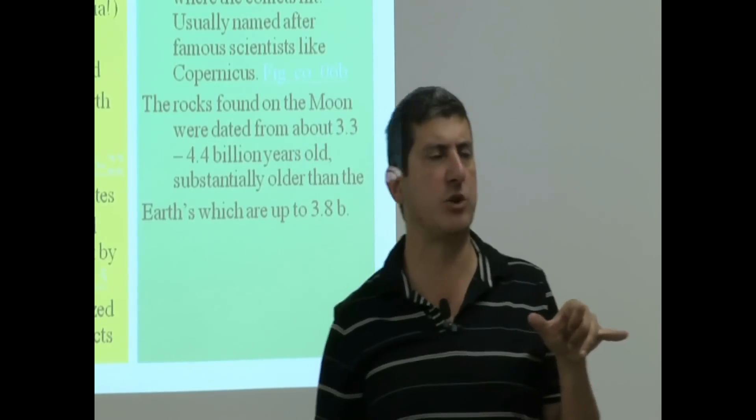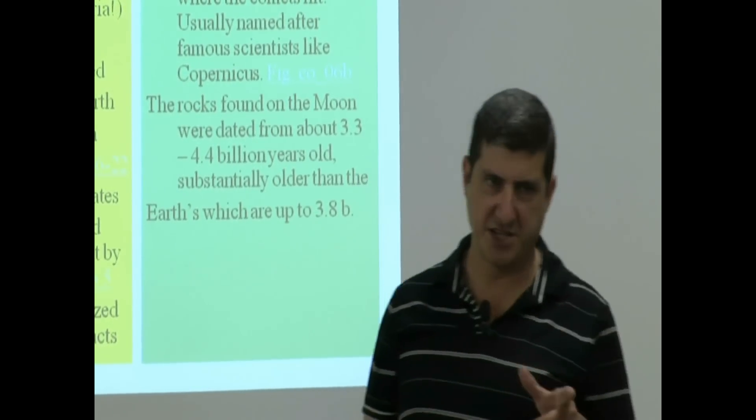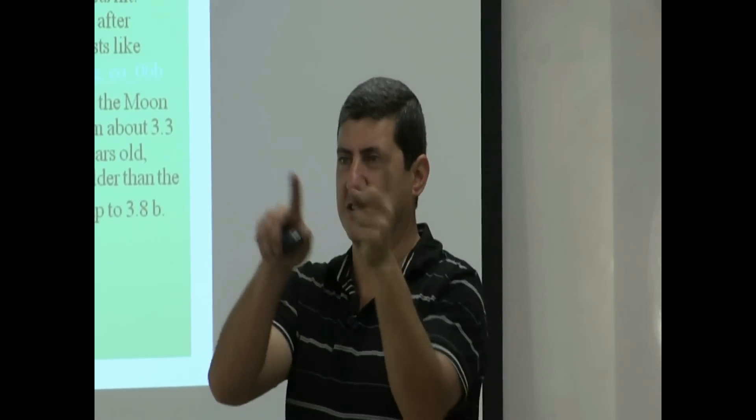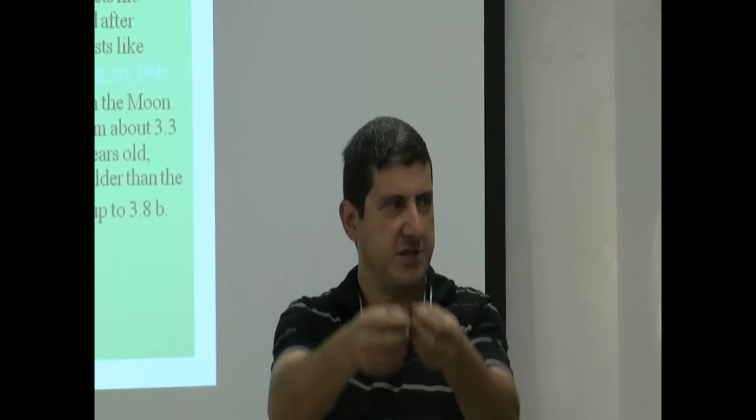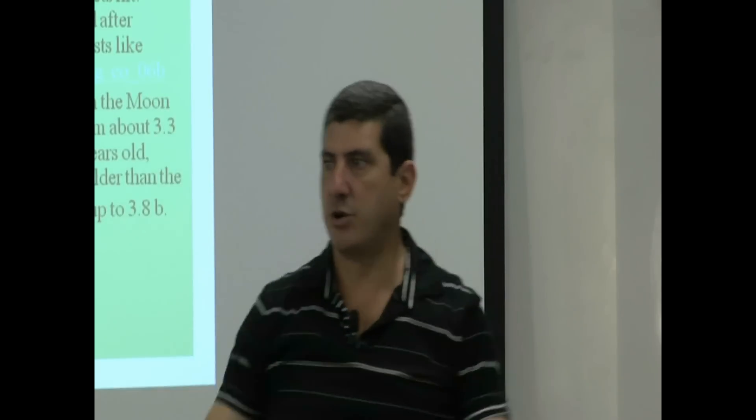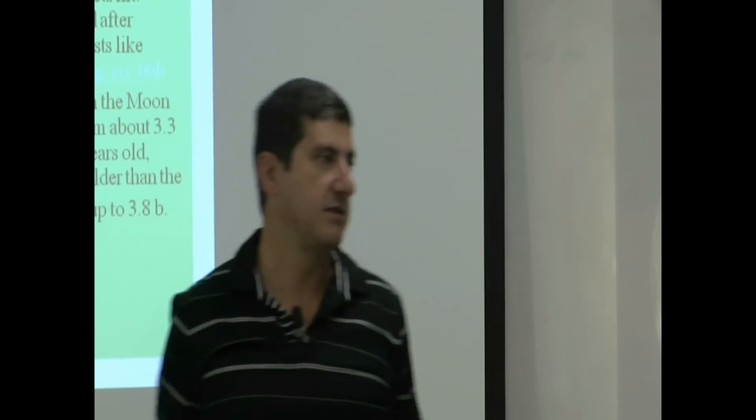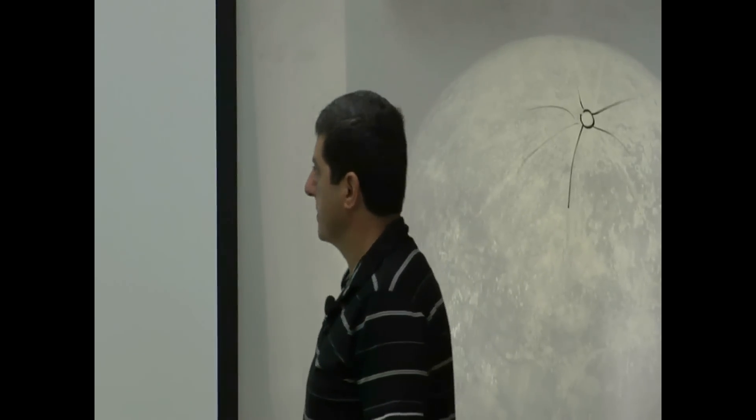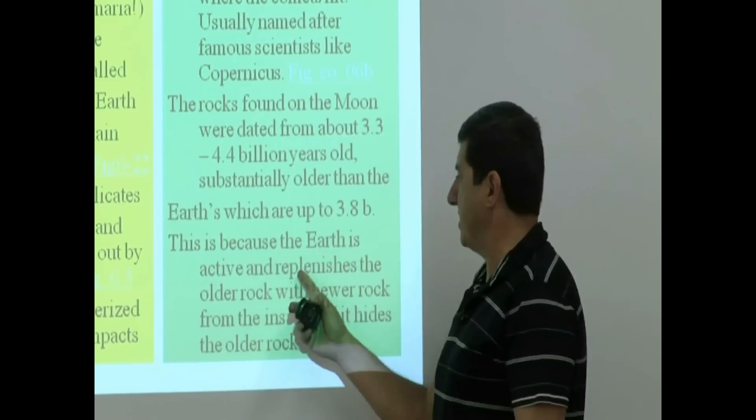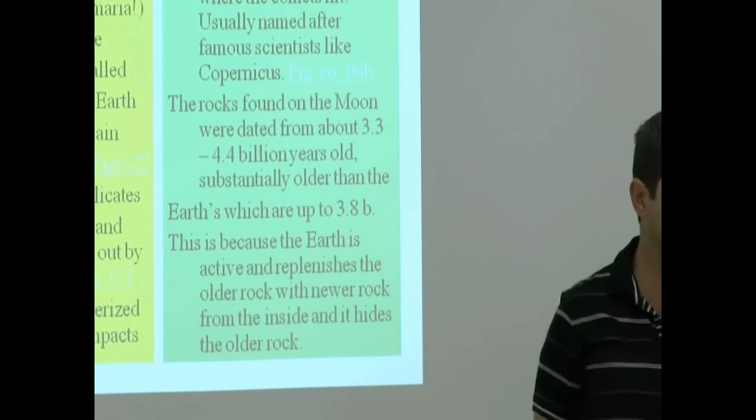If you simply look at that sentence, it will make it look like the moon is older. Oh, that's weird. The moon's rocks are older. Does that mean the moon is older? Not necessarily. Remember when we talked about the Earth, the convection currents. The rocks go, the continents go, and then they sink back down. So, the Earth kind of hides its age, like we like to hide our age. Whenever the rock is too old, it goes back into the Earth, and it gets recycled. Moon doesn't have that recycling activity. So, this is because the Earth is active, and it replenishes the older rock with newer rock from the inside, and it hides the older rock. So, that doesn't mean that the Earth is younger.